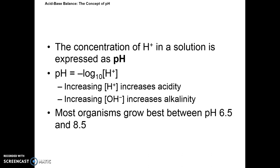So the concentration of hydrogen protons in a solution is expressed as pH. And the negative log 10 of the hydrogen is pH. So increasing hydrogen availability increases acidity, whereas increasing hydroxide levels increases alkalinity, or the basic properties. So as you go higher on the pH scale, you get more basic. As you go lower, you get more acidic.